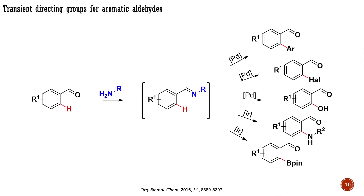For instance, aldehydes are not good directing groups for late transition metals. However, in the presence of catalytic amounts of primary amines, they can be reversibly transformed into corresponding Schiff bases, which serve as far better directing groups. After the C-H transformation, the Schiff base can be hydrolyzed back to the corresponding aldehyde, allowing the amine to be used in catalytic amounts. Based on this strategy, recent developments include C-H arylation, halogenation, hydroxylation, amination, and borylation reactions.